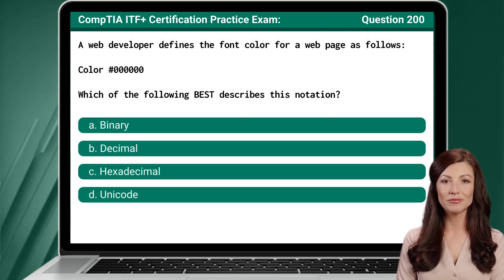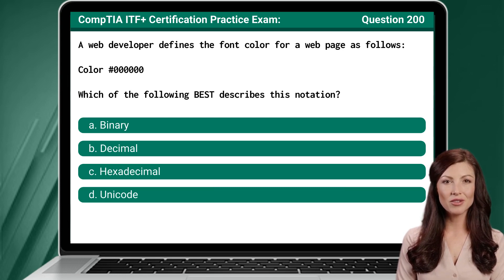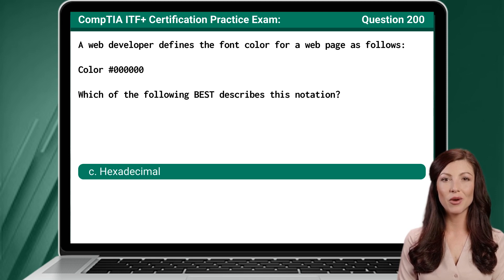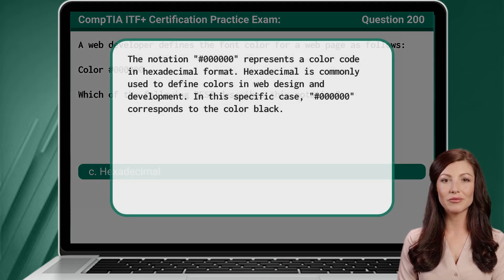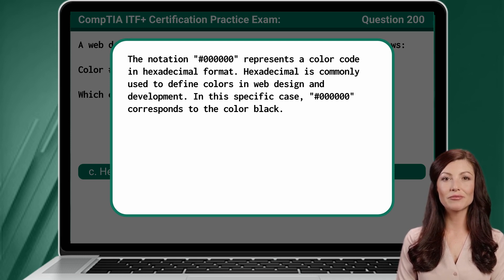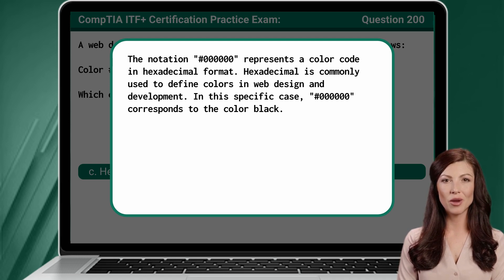Question 200. A web developer defines the font color for a web page. Which of the following best describes this notation? The answer is C: Hexadecimal. The notation presented here represents a color code in hexadecimal format. Hexadecimal is commonly used to define colors in web design and development. In this specific case, the presented hexadecimal value corresponds to the color black.